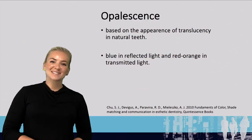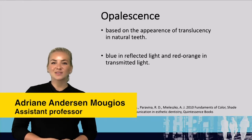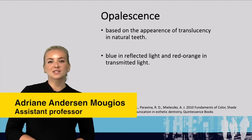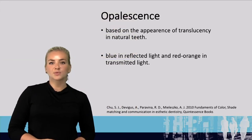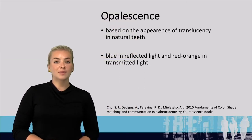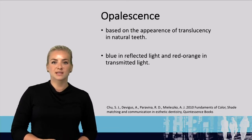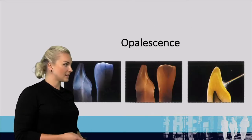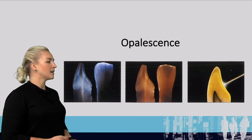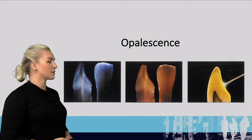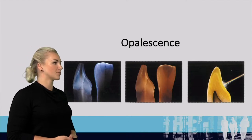Opalescence is based on the translucency in natural teeth. We have the longer wavelengths which appear as red-orange, and then the shorter wavelengths which are reflected back and appear as bluish, like the enamel in the translucency. In this picture you can see the reflected light which appears bluish, and then the transmitted light which appears as red-orange.